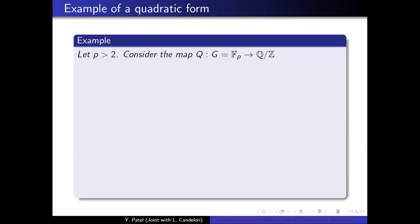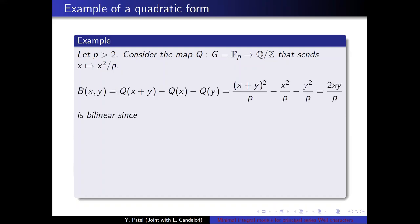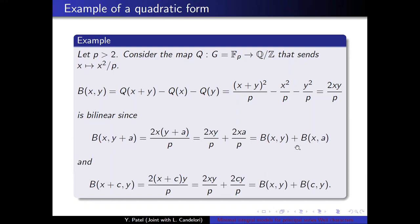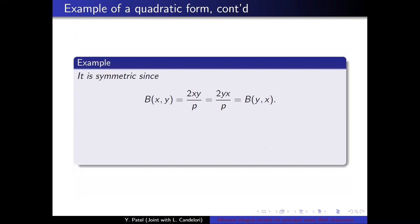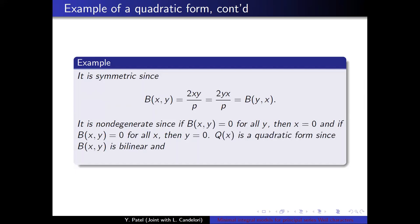So a quick example. Let P be an odd prime. Let the map Q send x to x squared over P. Then B(x,y) is equal to 2xy over P. It's going to be bilinear, given by this expression, it's fairly clear. It's symmetric because B(x,y) is equal to 2xy over P, which is the same as 2yx over P. It is non-degenerate since if B(x,y) is 0 for all y, then x has to equal 0. And if B(x,y) is 0 for all x, then y is equal to 0. It's a quadratic form since its form is bilinear and it's an even function. And the level of Q(x) is P. I will use this to construct the first Weil character later.